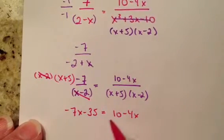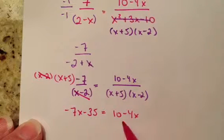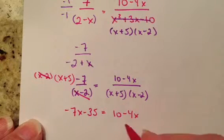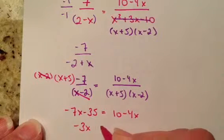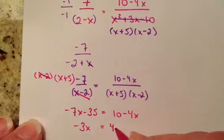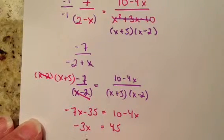Okay, so now I'm just going to move all the x's to one side and all the numbers to the other. So I'm going to add 4x. So I'm going to get negative 3x. And over here, I'm going to get 45. And I can divide by 3, so I get x equals negative 15. And that is the final answer.